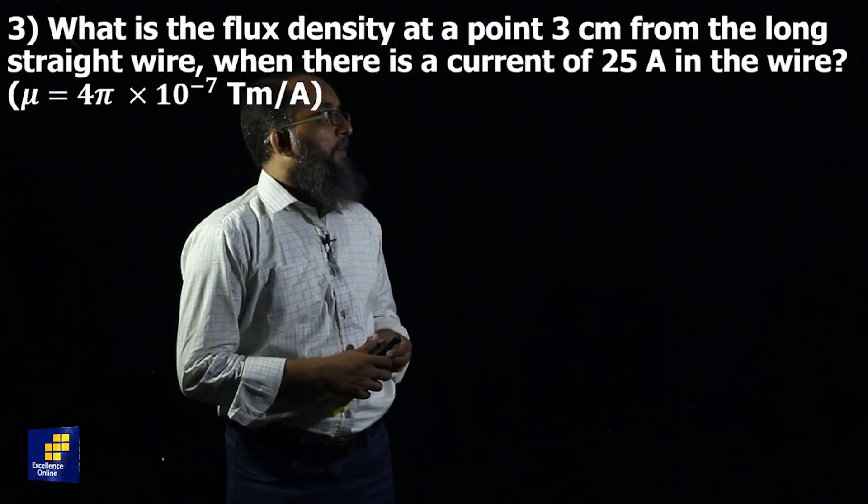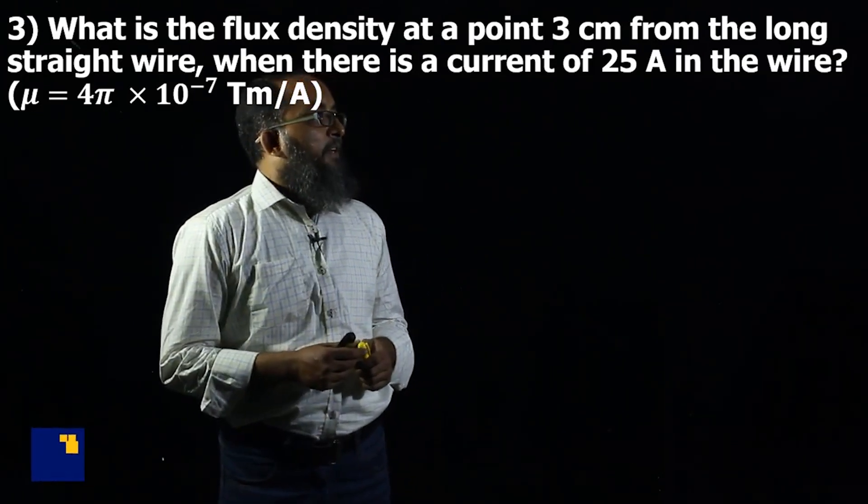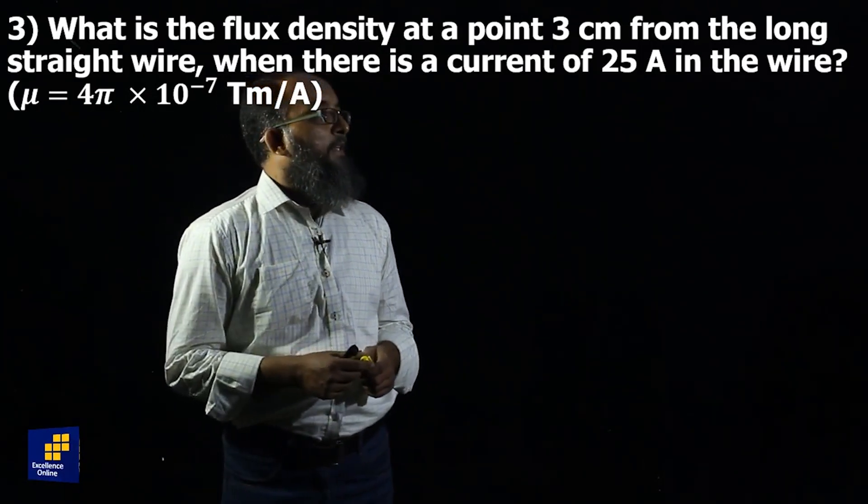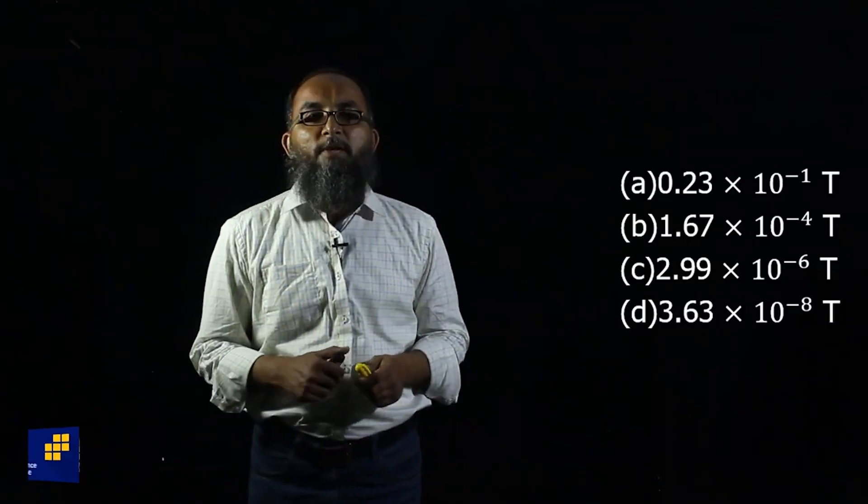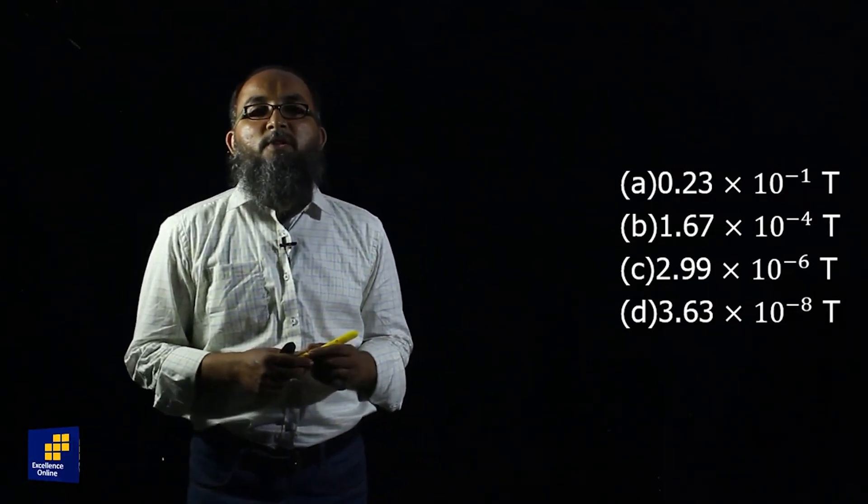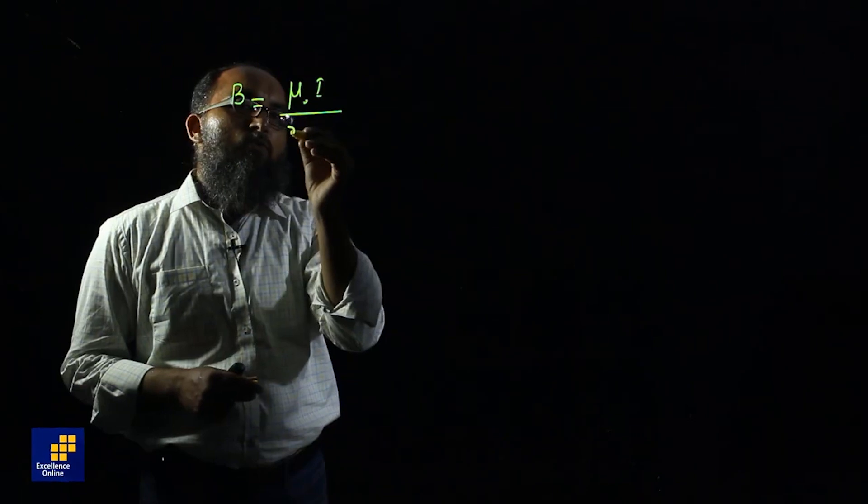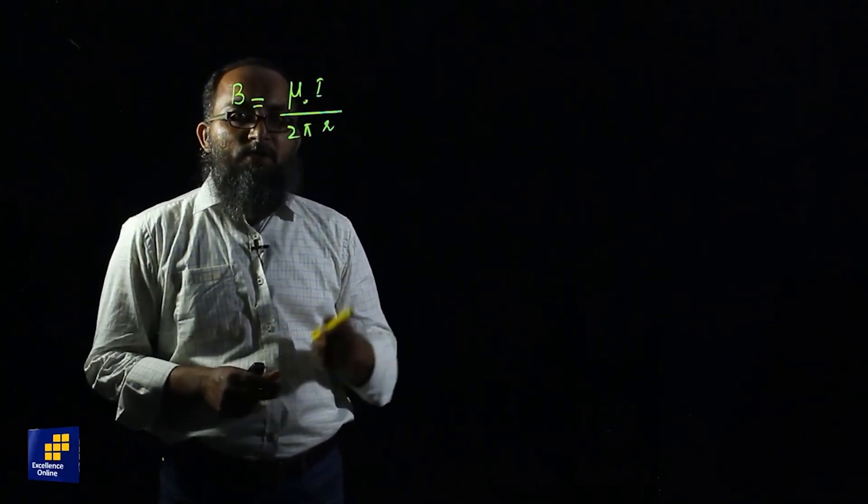Question number 3 of MCAT 2009 paper is: What is the flux density at a point 3 cm from a long straight wire when there is a current of 25 ampere in the wire? The value of permeability of free space is 4 pi exponential minus 7 tesla meter per ampere. To find the magnetic flux density, we have to apply Biot-Savart law. According to Biot-Savart law, the magnetic flux density around a long straight wire is given by mu naught i upon 2 pi r. In this relation, mu naught indicates the permeability of free space.